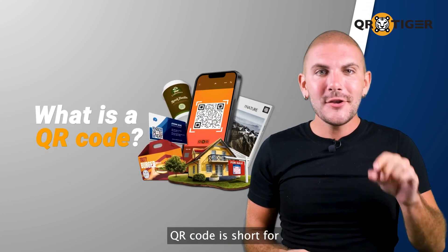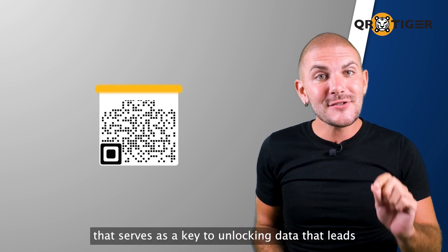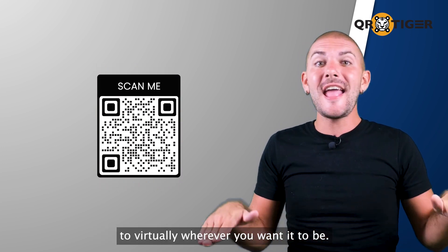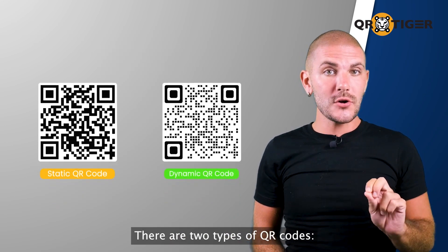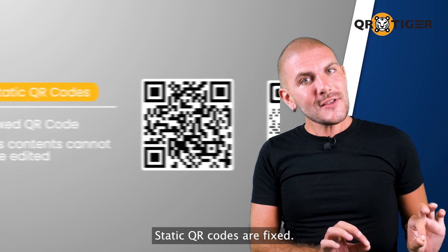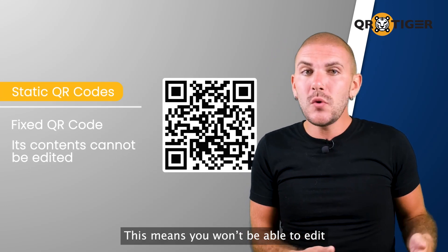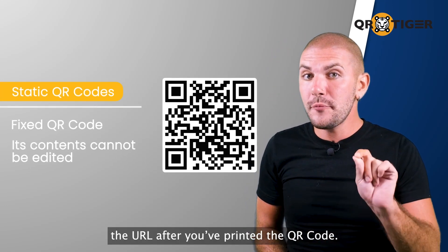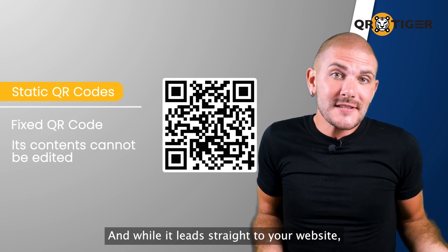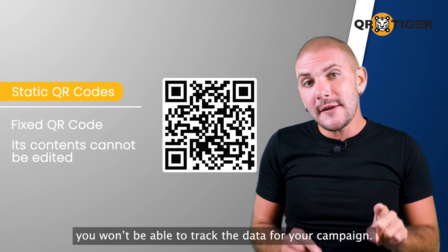But before we go on, let's talk about what a QR code is. QR code is short for quick response code — it's a matrix barcode that serves as a key to unlocking data that leads to virtually wherever you want it to be. There are two types of QR codes: static and dynamic. Static QR codes are fixed, meaning you won't be able to edit the URL after you've printed the QR code, and while it leads straight to your website, you won't be able to track the data for your campaign.